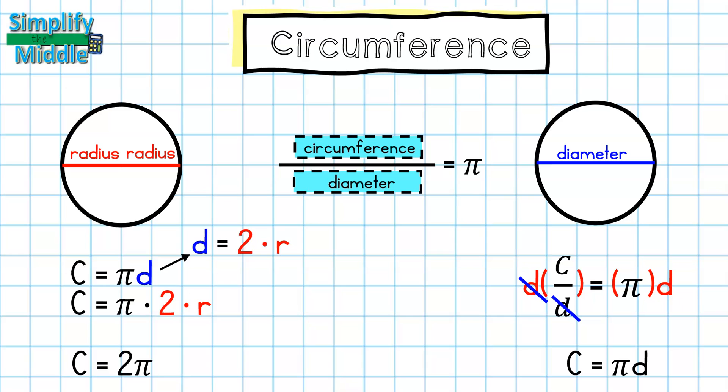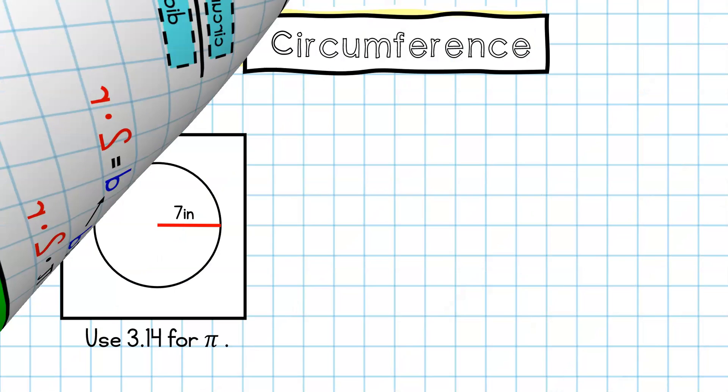The reason that this way is preferred is because it makes sense: I am substituting in two times R for diameter, which is going to give me two times pi times R equals circumference. These are the two formulas we'll be using to solve circumference problems today. So let's get started.